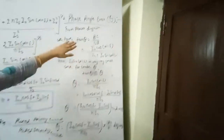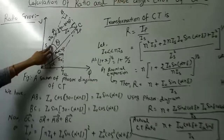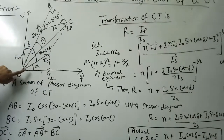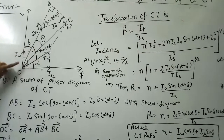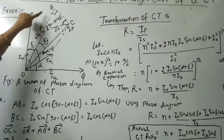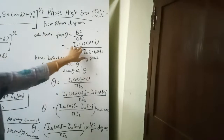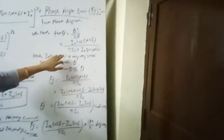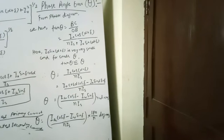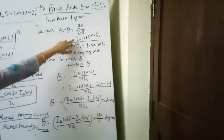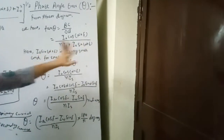For phase angle error θ, from the phasor diagram, θ is the angle between the secondary current referred to the primary side and the primary current. tan θ = BC/OB = I₀ cos(α + δ) / (N·IS + I₀ sin(α + δ)). Since I₀ sin(α + δ) is very small, and for small θ, tan θ ≈ θ, we get θ = I₀ cos(α + δ) / (N·IS).